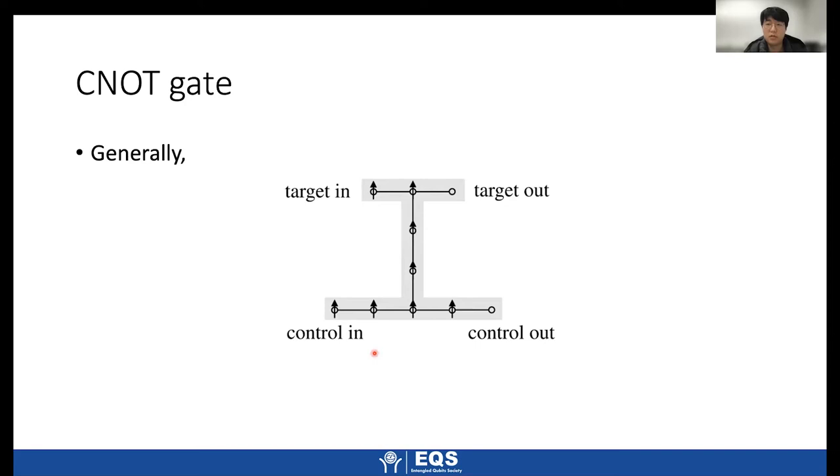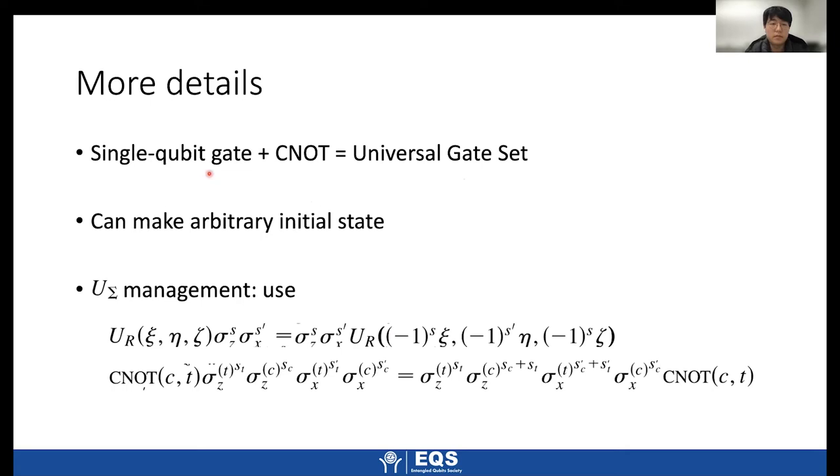Before we saw how to implement CNOT gate, but in general, usually our target state and control state will be far away. So using the information propagation, we can generally construct CNOT gate using this configuration. And well, the detailed operation would be different, but basically it would be the same. We use output, measurement output to make our target state. To give more details, with general single qubit gate and CNOT gate, we can make a universal gate set. This is not specific proof, but we can say that measurement based quantum computing is actually universal.